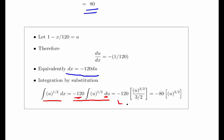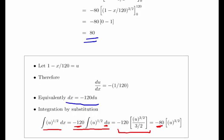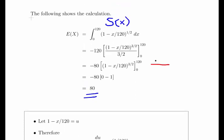Straightforward integration: -120 times u^(3/2) divided by 3/2. So -120 divided by 3/2 works out to be 80, giving us -80 times u^(3/2). That's where we pick up: -80(1 - x/120)^(3/2) evaluated between 120 and 0.